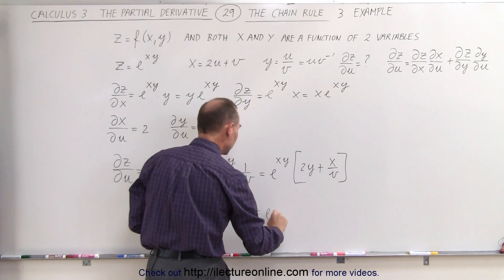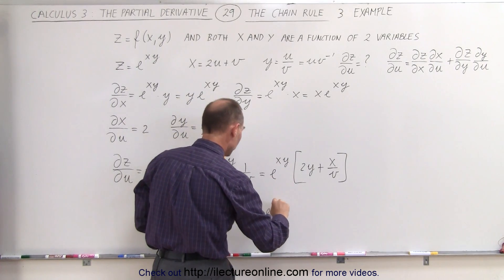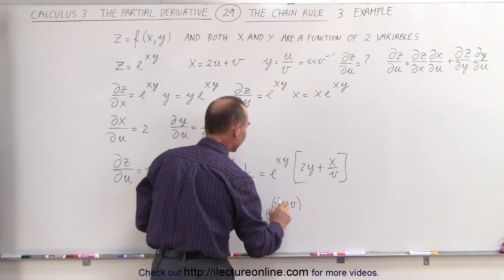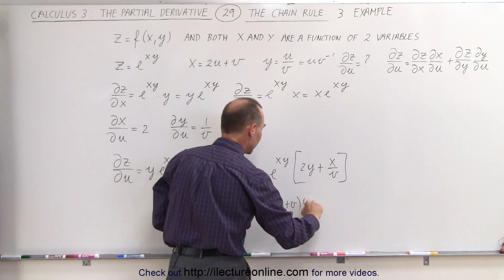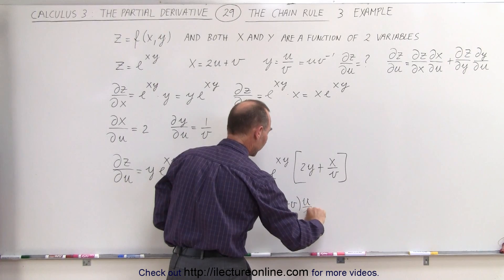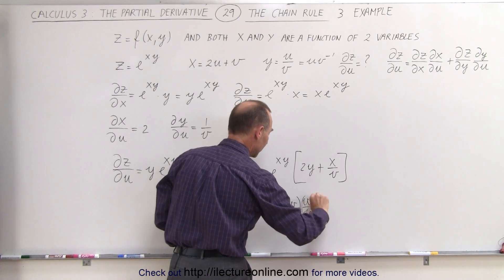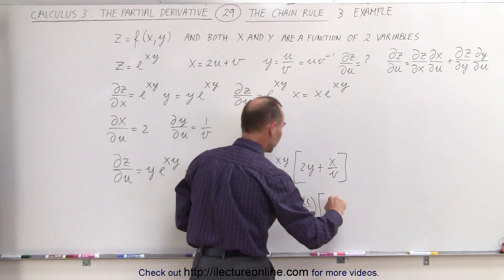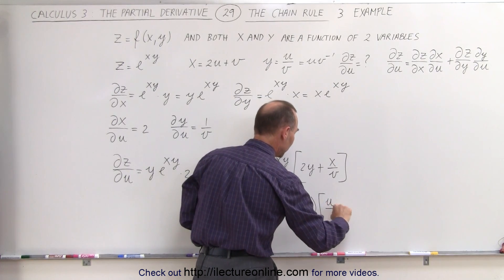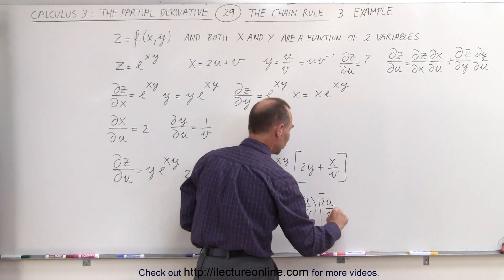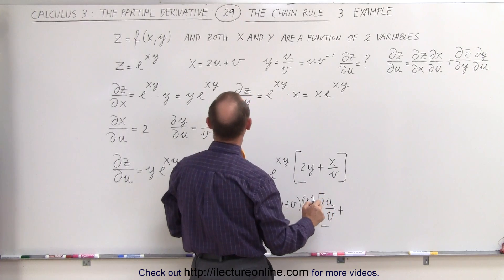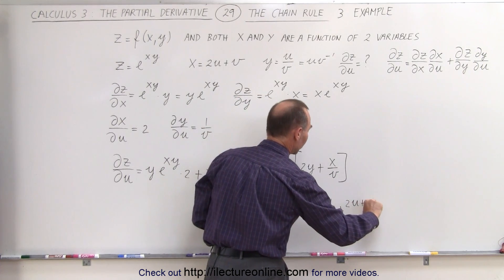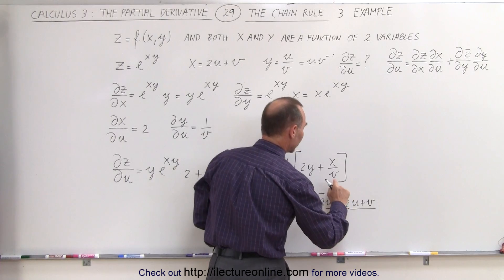Substituting, this equals e raised to (2u + v) times (u/v) — that's the exponent — times the quantity 2 times y, which is u/v (multiplied by 2), plus x divided by v, which is (2u + v) divided by v.